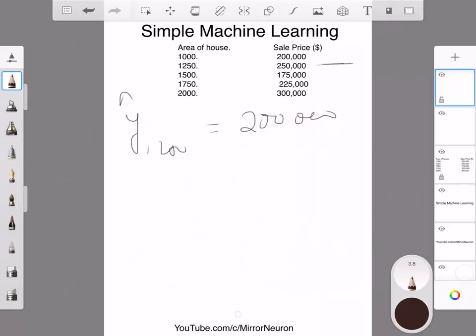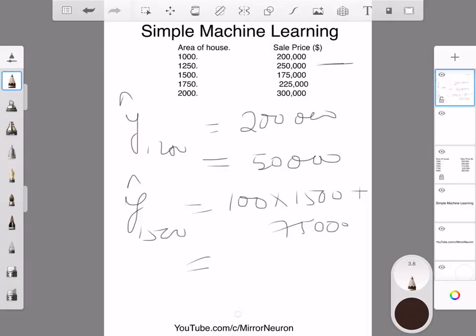I continue with my third calculation, which is 1,500 square feet. I do the same calculation again: 100 times 1,500 plus 75,000. If I calculate this, it comes around 225,000. If I compare it with my third value, then I am off by about 50,000.